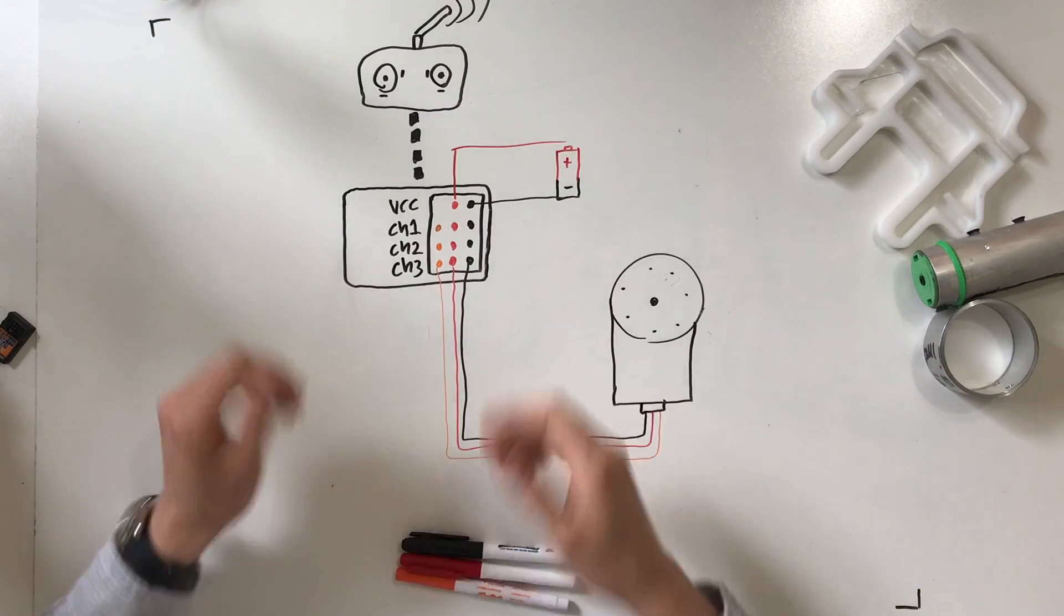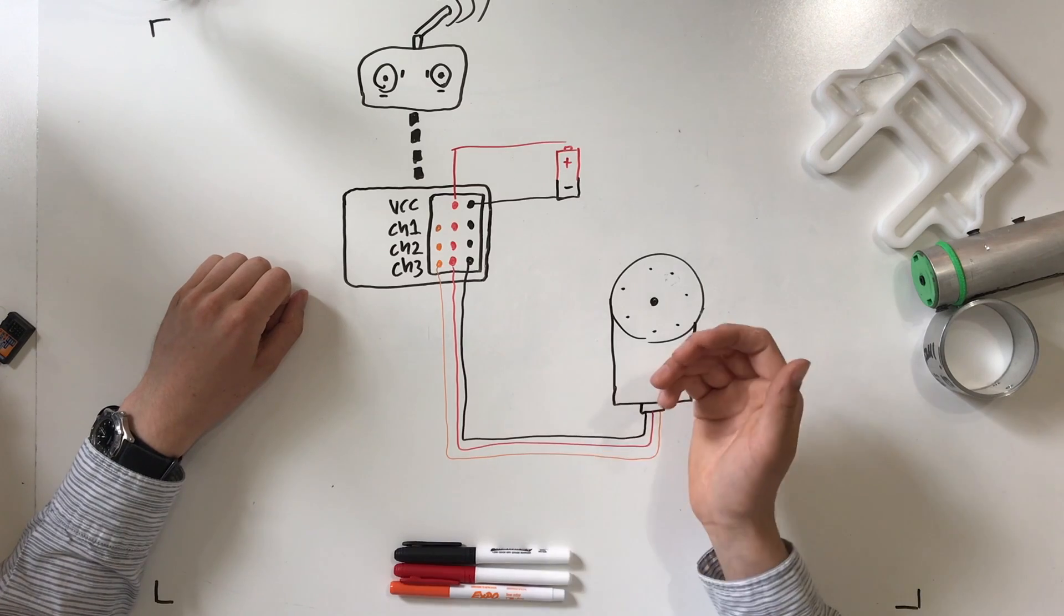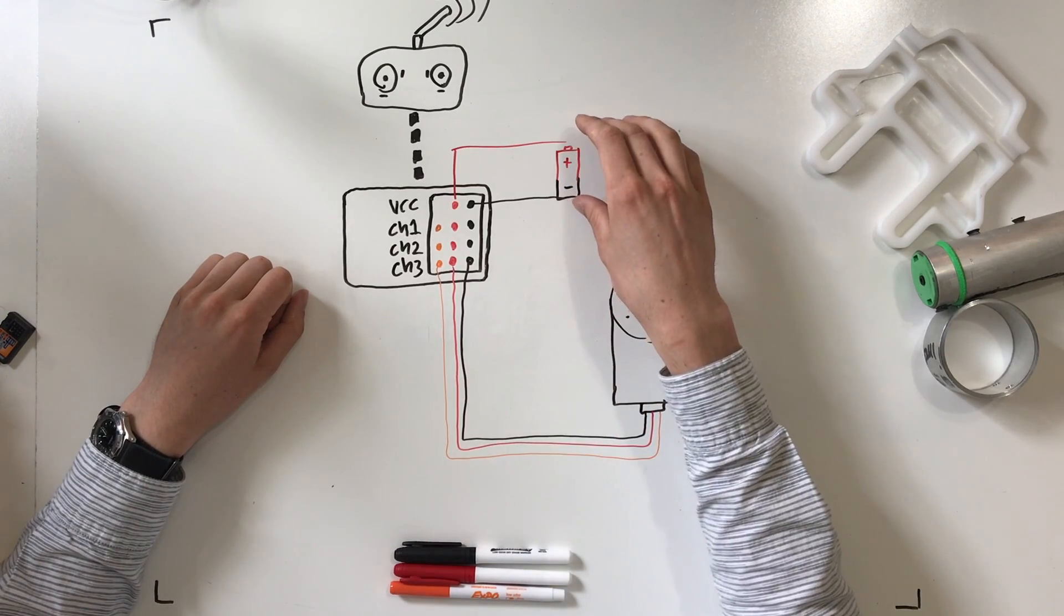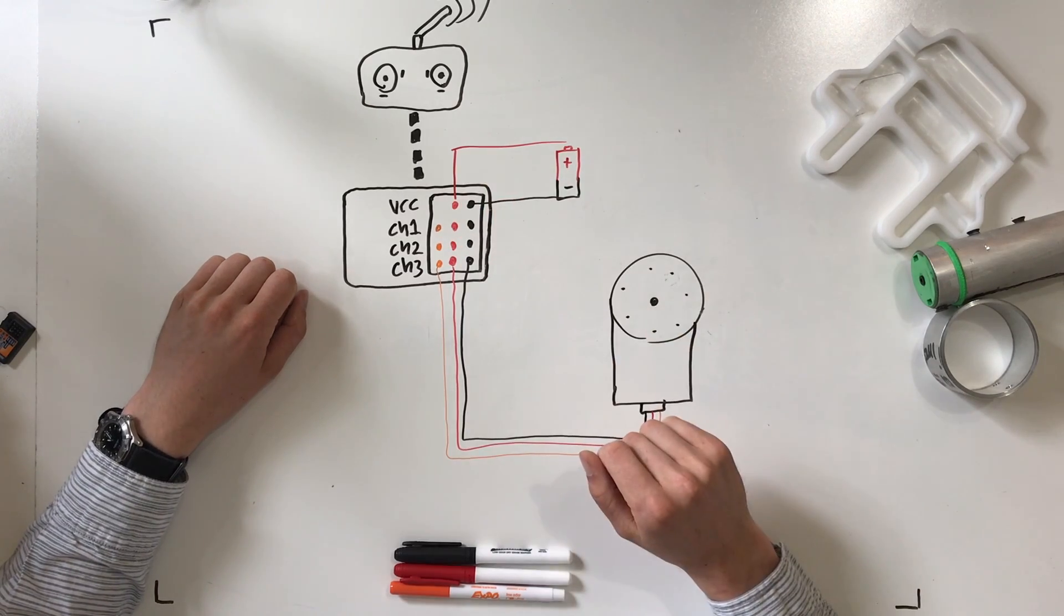So to attach it, you just plug it into one of the channels of the receiver like this. Now if you're just driving a servo, your receiver is also going to need some battery power. Now receivers can't usually take very high voltage. Look at your receiver and make sure your battery matches the voltage that it expects to have in this input. Typically it's like five or six volts. You can't typically run the receiver off of like a 12 volt battery.